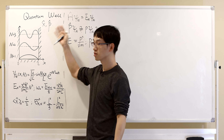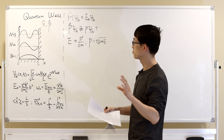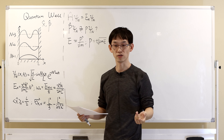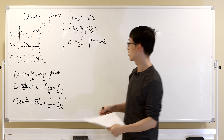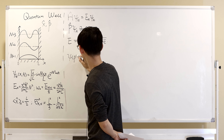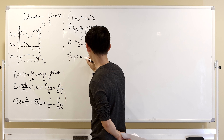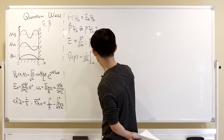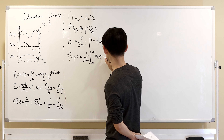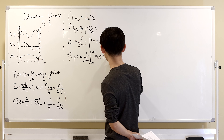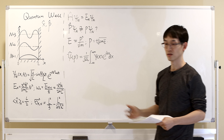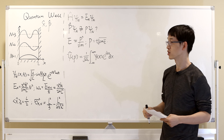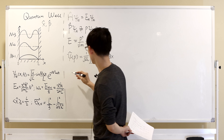To measure momentum, there are two possible approaches. One is to do a Fourier transform — we know that you can get the momentum probability distribution by doing a Fourier transform of the position wave function. This is the textbook approach.